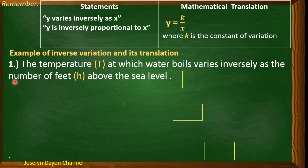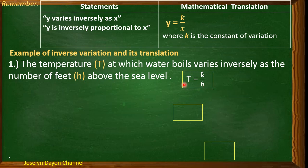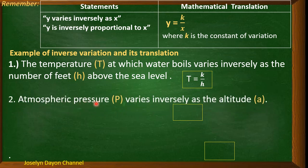Let's have examples. First statement: the temperature t at which water boils varies inversely as the number of feet h above sea level. So t is the dependent variable, and the translation is t = k/h, where k is the constant of variation in the numerator and h is in the denominator. Second: atmospheric pressure p varies inversely as the altitude a. The translation is p = k/a.